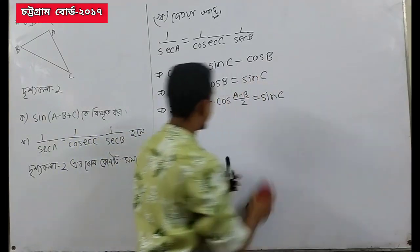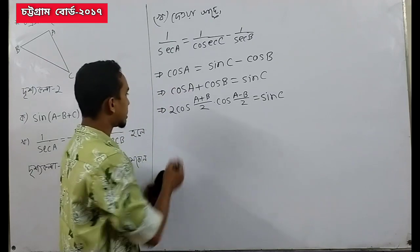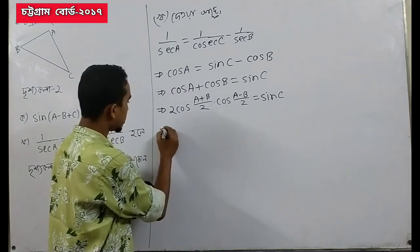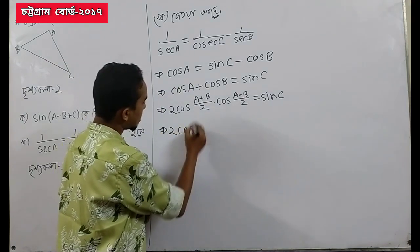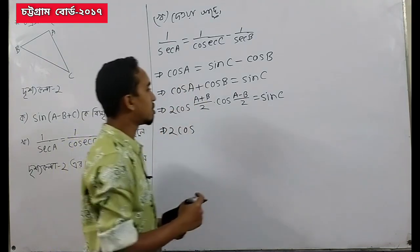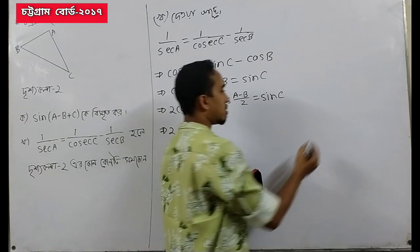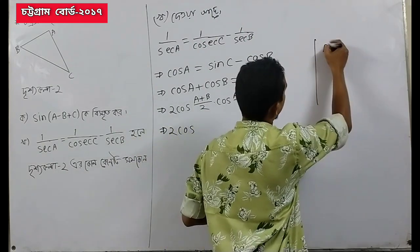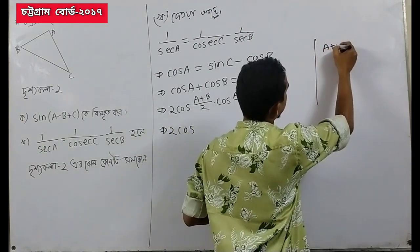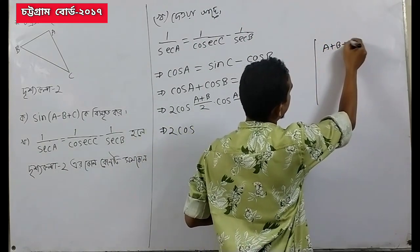Now we must take the first cos. This cos — you can see cos, a plus b divided by 2 into cos c.